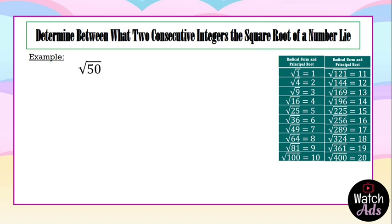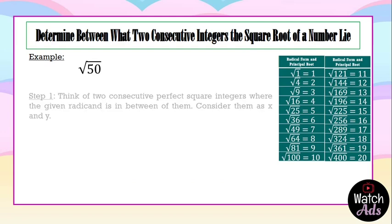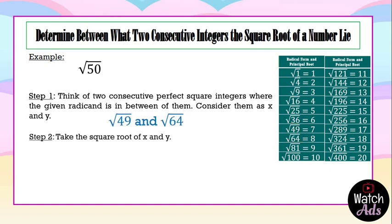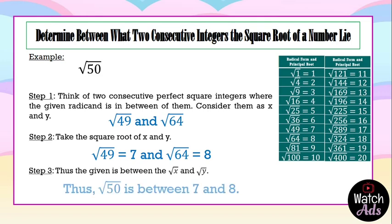Let's have another example: the square root of 50. First, we find two consecutive perfect square integers where the square root of 50 is in between. We can see the square root of 49 and the square root of 64. Taking their square roots, that is 7 and 8 — the square root of 49 is 7 and the square root of 64 is 8. This gives us: the square root of 50 is between 7 and 8.